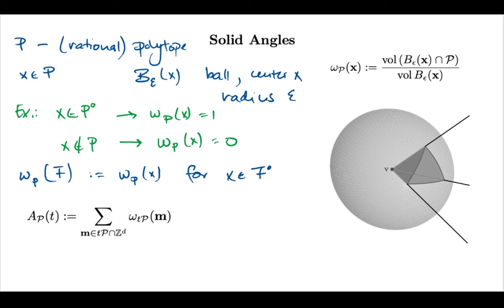So we're computing the solid angle of the integer point with respect to t times P. We just said that outside of my polytope the angle is zero, so we can think of this as a sum of all integer lattice points.